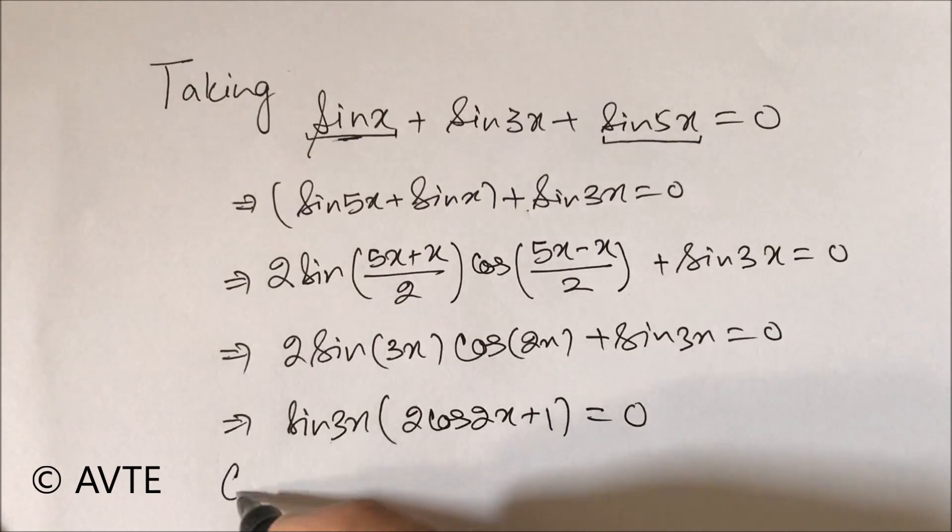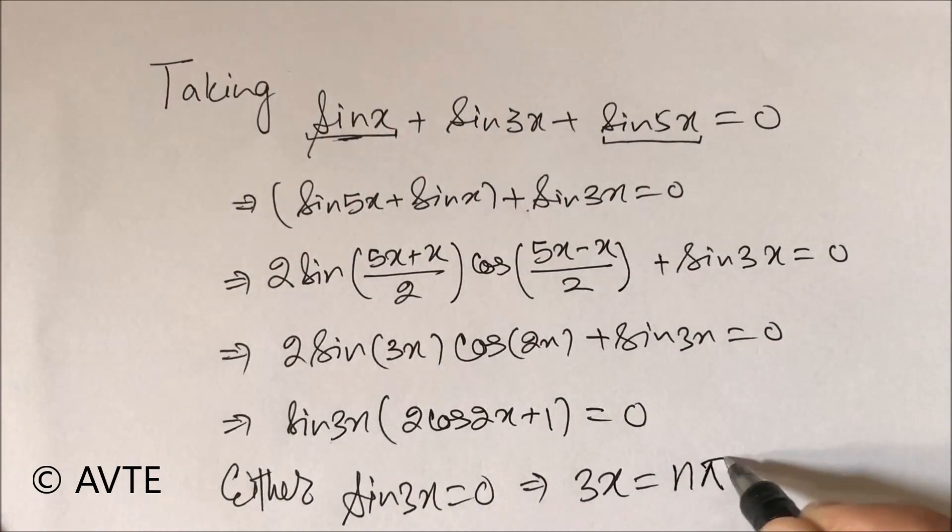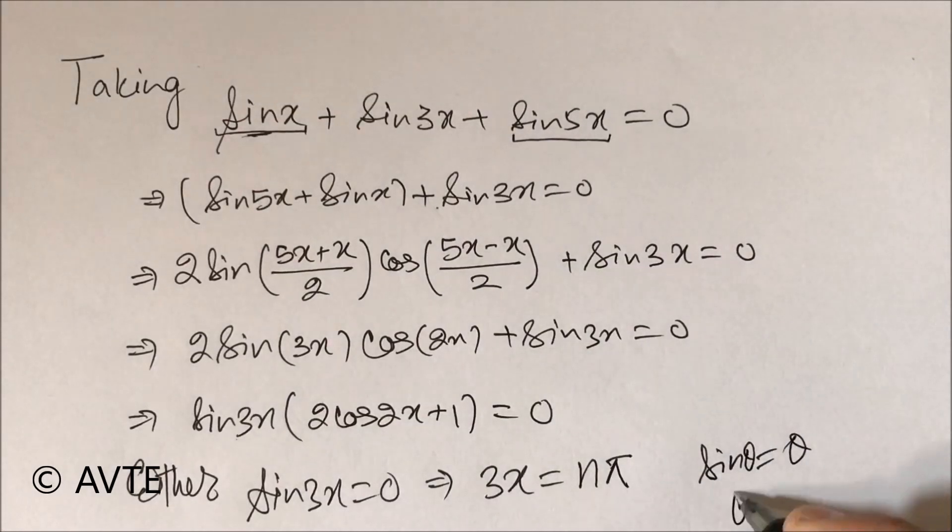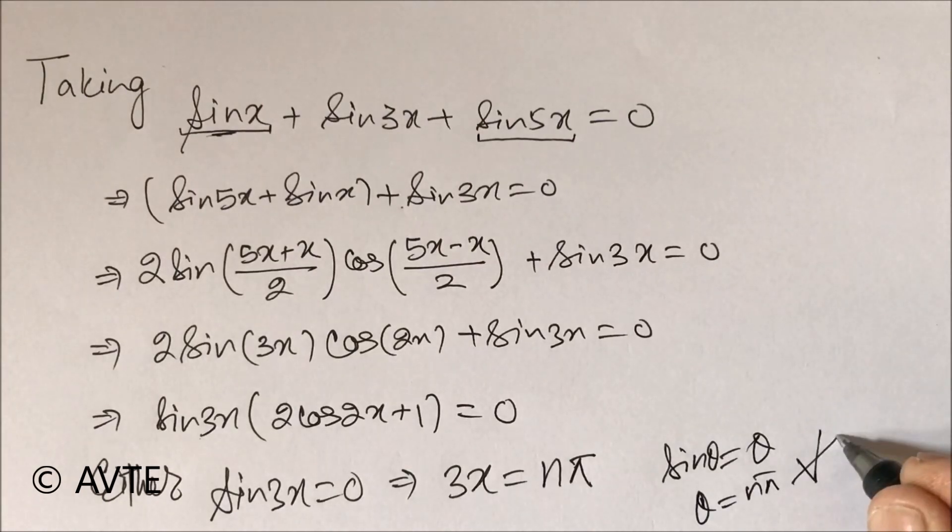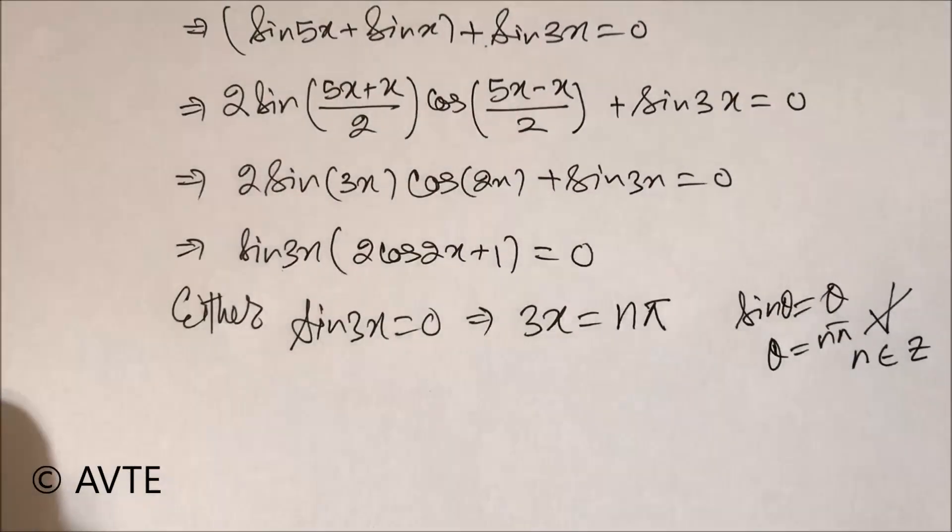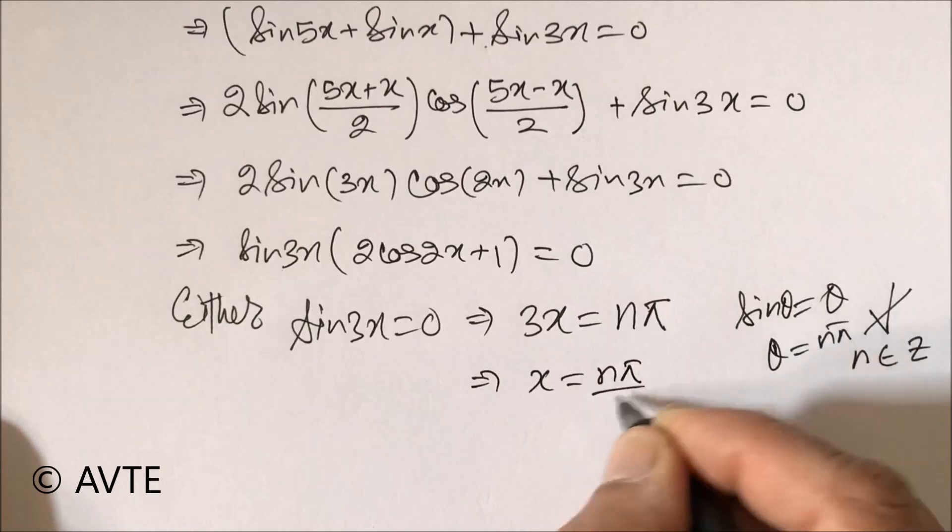So either sin 3x is equal to 0, with that 3x is equal to n pi because whenever sin theta is 0, theta is n pi for all the values. This is the symbol of for all the values of n belonging to integers, therefore x is equal to n pi by 3.